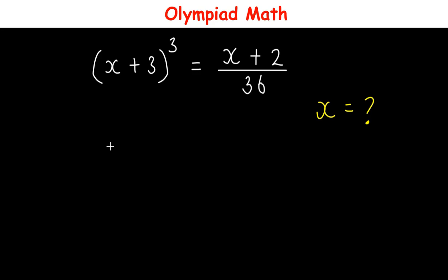Hello everyone. In this video, let us solve this question. We have (x+3)³ = (x+2)/36, and here we find the possible values of x.